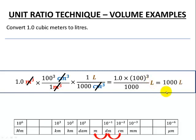Perform that calculation on your calculator, and you wind up getting 1000 liters. So 1 cubic meter is the same as 1000 liters.